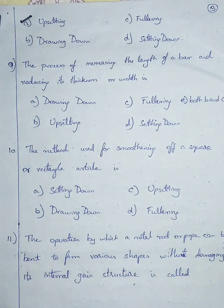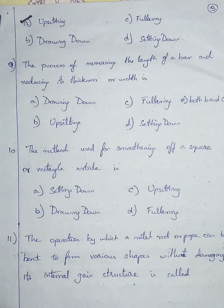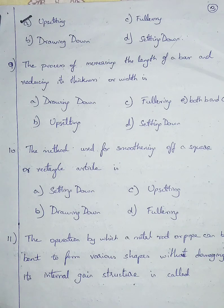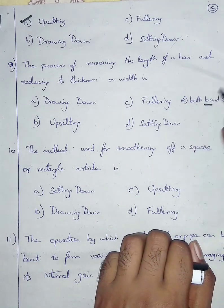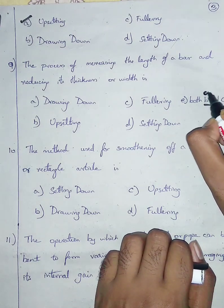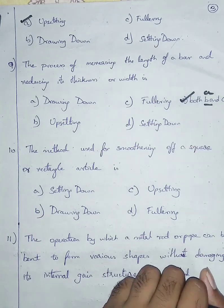Question number nine: the process of increasing the length of the bar by reducing its thickness or width is — option A: drawing down, option B: upsetting, option C: fullering, option D: setting down. The answer is option A, drawing down. Drawing down is also called fullering, so I'm going with option E, both A and C.